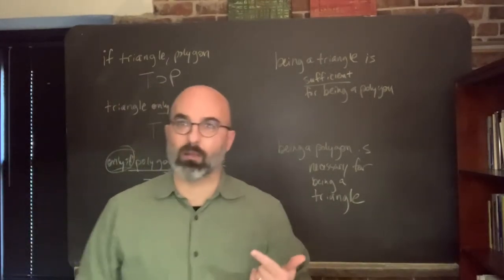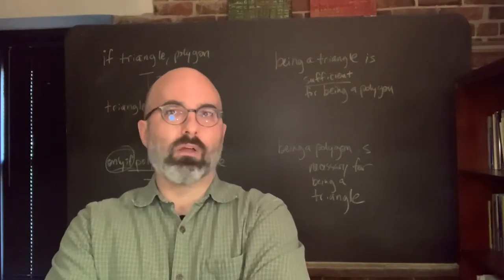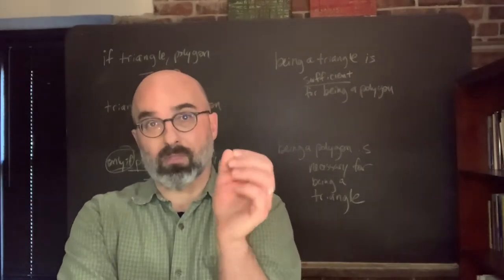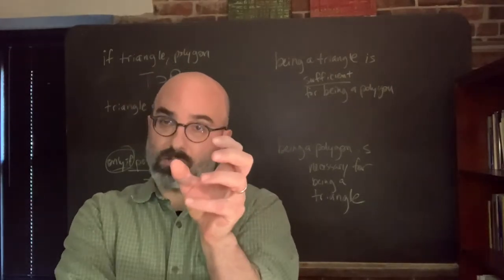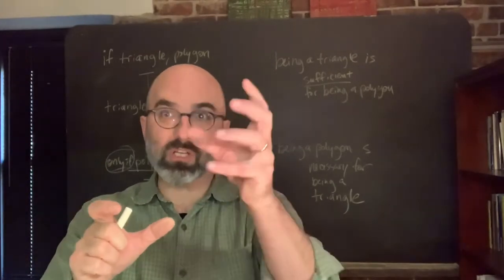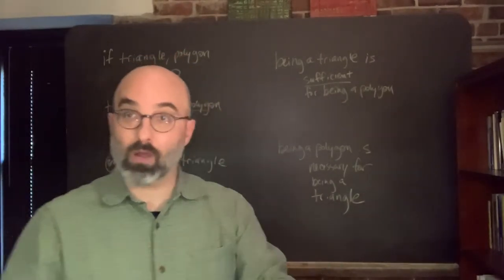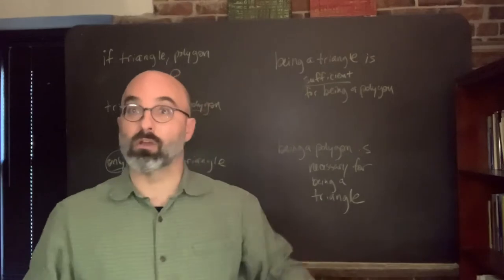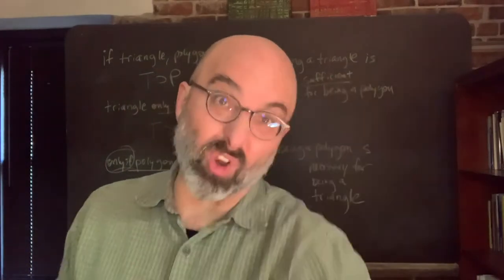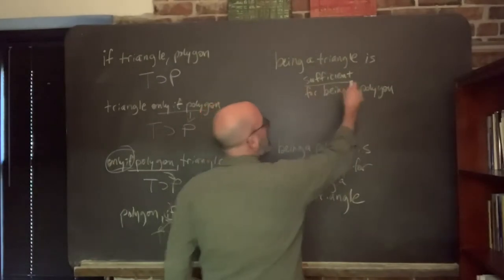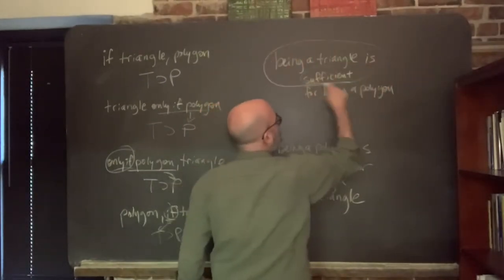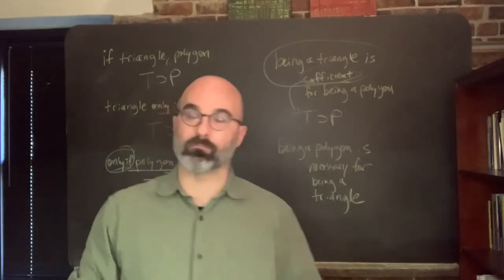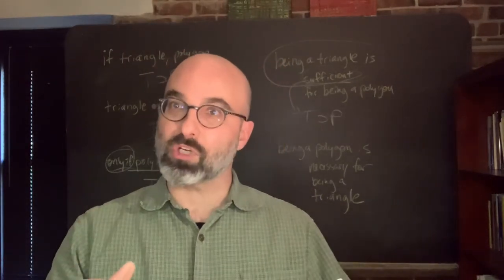Being a triangle is sufficient for being a polygon. A sufficient condition is something that says anytime you've got one of these things, you're going to get one of these things — the sufficient condition is the guaranteeing thing. A sufficient condition works like an 'if' clause. Whatever is the sufficient condition goes in the antecedent, and whatever it's sufficient for goes in the consequent. So sufficient conditions go in the antecedent.